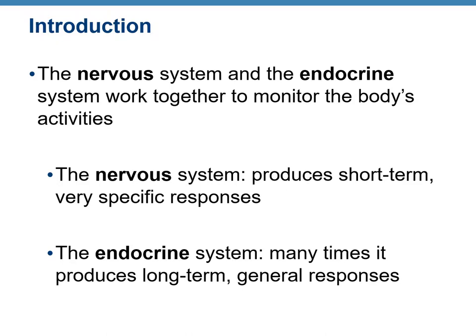The difference between the nervous and endocrine system is that the nervous system produces very quick response — it's a short-term response and the responses are very specific. The endocrine system, on the other hand, takes longer time and the responses are long-term. While these are not as specific, they are more generalized.